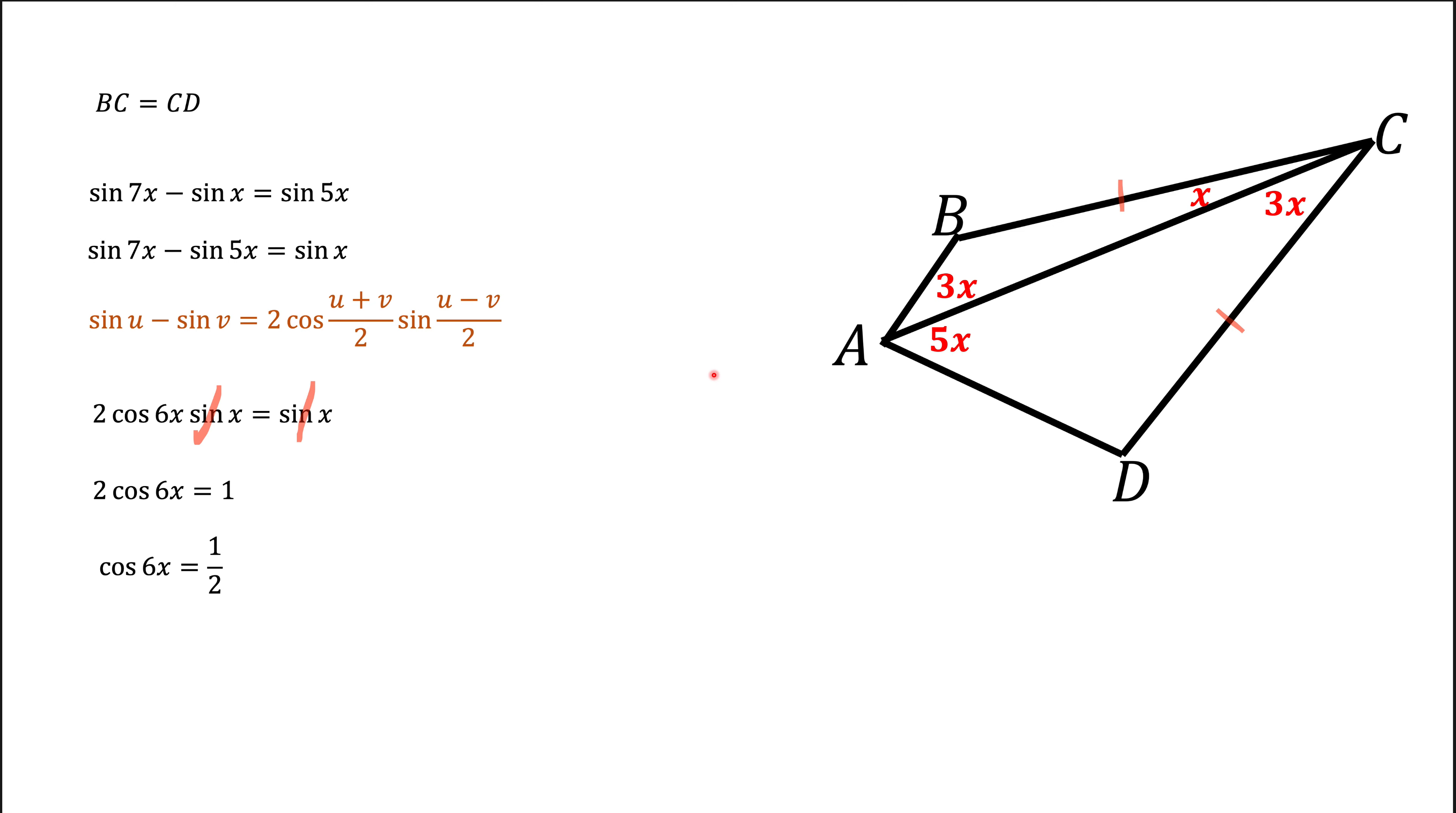To see what kind of solutions we can have, first let's look at this angle A. Angle BAD is 3x plus 5x, which is 8x. This 8x angle should be less than 180 degrees. If 8x is less than 180 degrees, 6x is also less than 180 degrees.